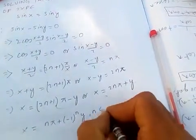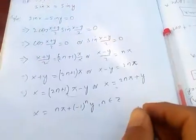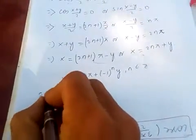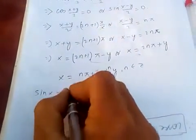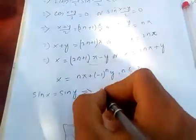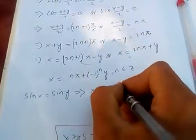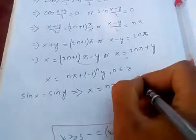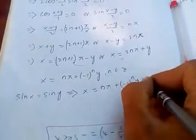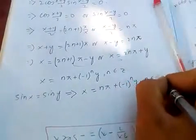Therefore, the general solution to sin x equals sin y is x equals nπ plus (-1)^n times y, where n belongs to the integers.